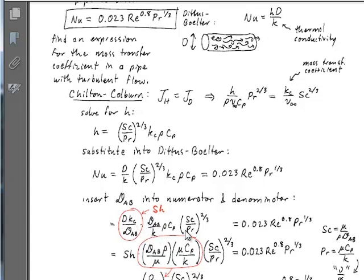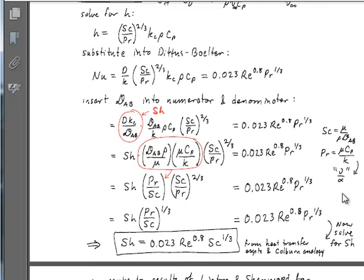What's left over is the diffusivity over the thermal conductivity, not the mass transfer coefficient, times the heat capacity and the ratio of Schmidt and Prandtl. And the right hand side, we haven't done anything to that.